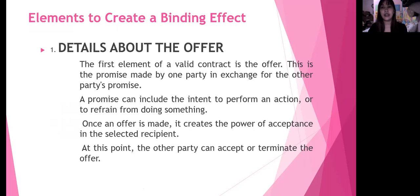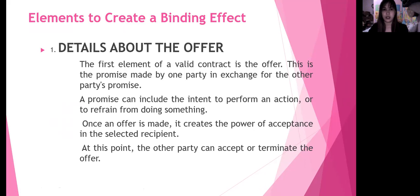Elements to create a binding effect. Number one: details about the offer. The first element of a valid contract is the offer. The promise is made by one party in exchange for the other party's promise. A promise can include the intent to perform an action or to refrain from doing something.